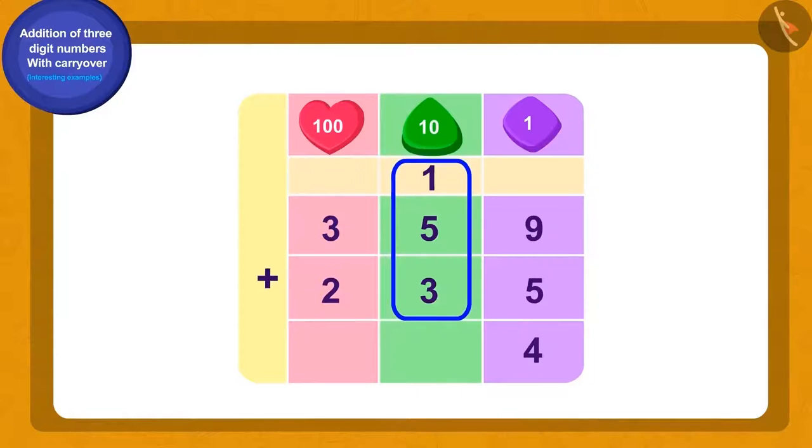Now, what is the total of the tens place numbers? 1, 5 and 3. 9.